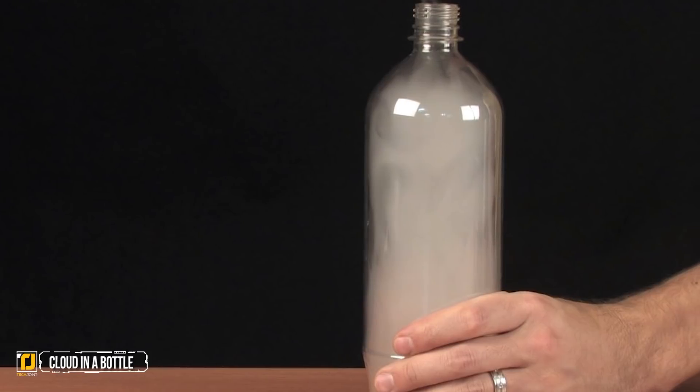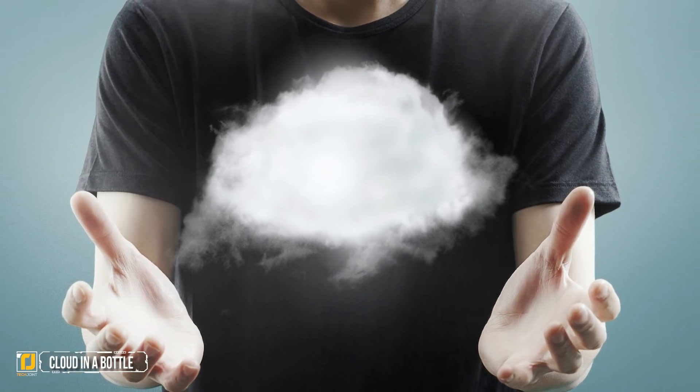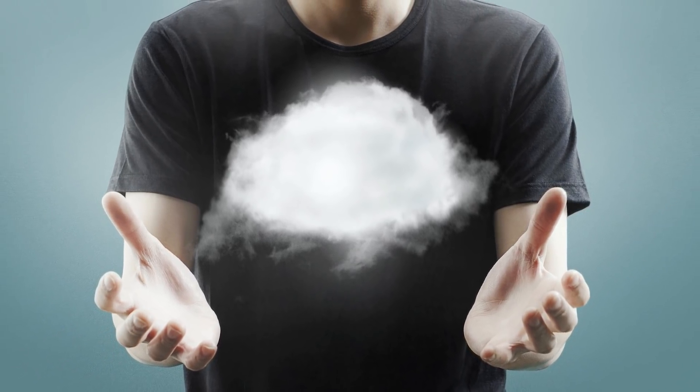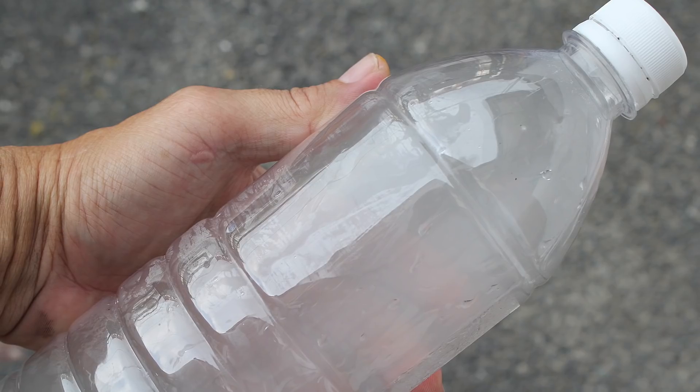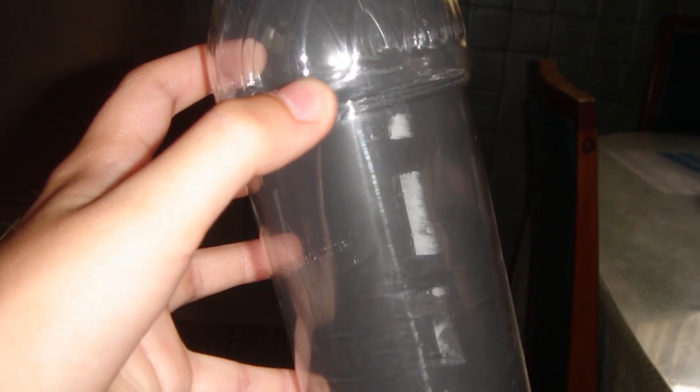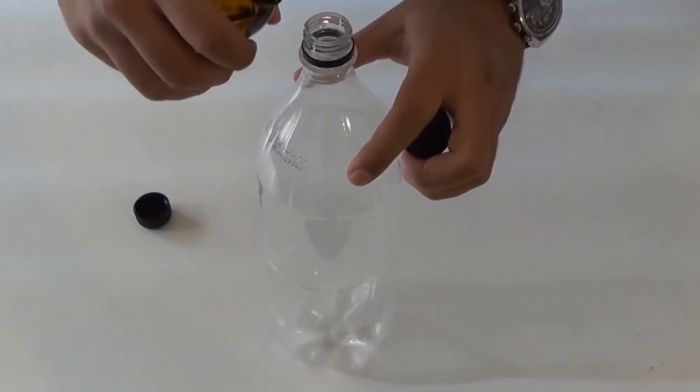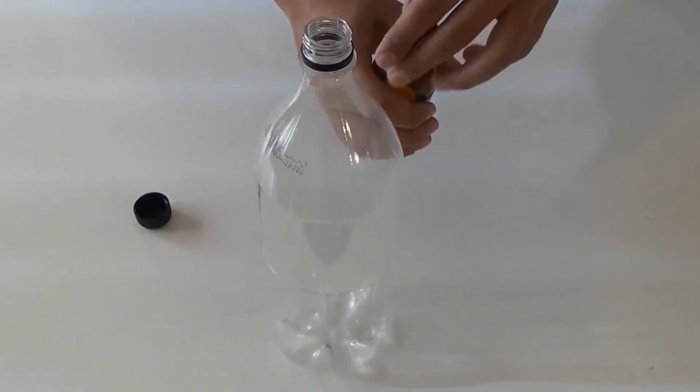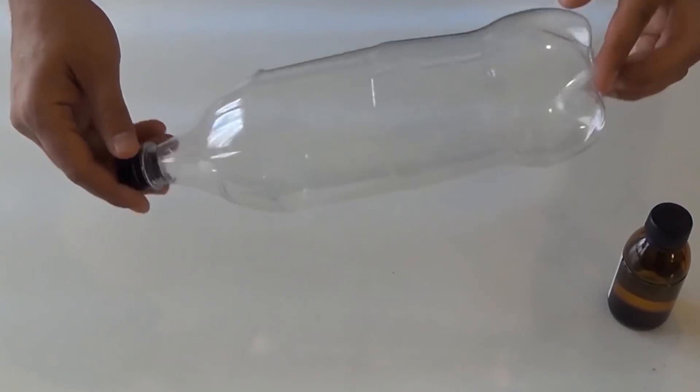Number two: cloud in a bottle. If you've ever wanted to control the weather from the comfort of your own home, we have a solution for you. Making a cloud in a bottle is easy and is quite an impressive trick that involves very little effort.